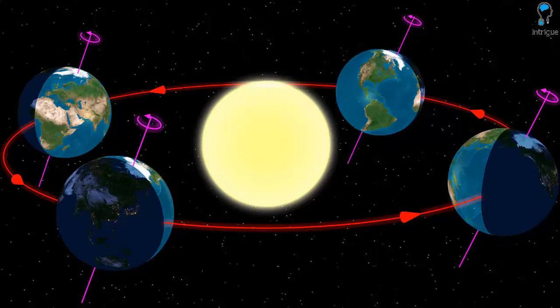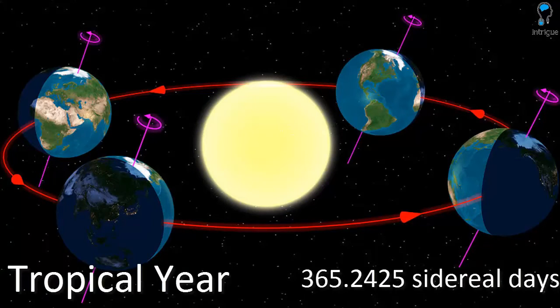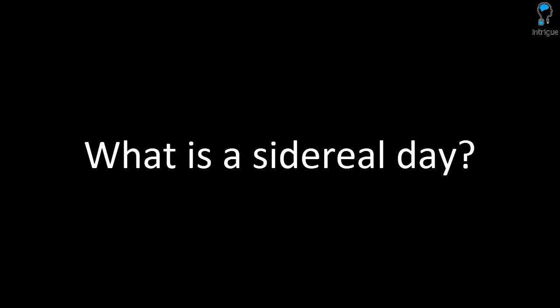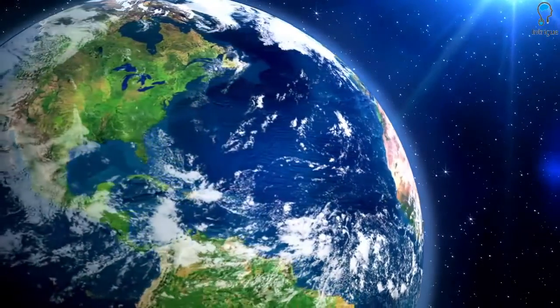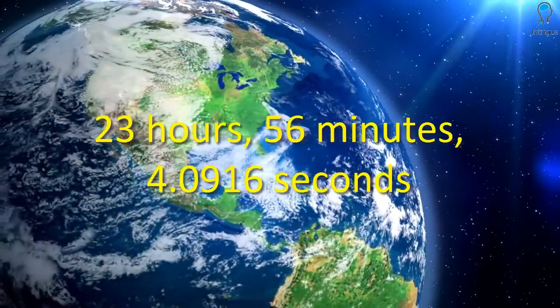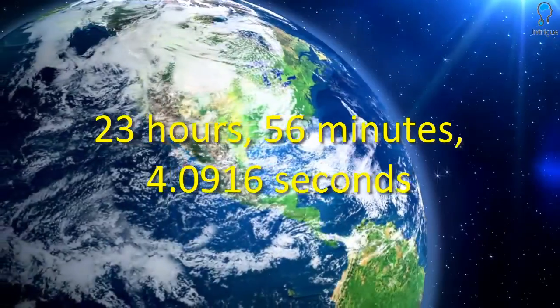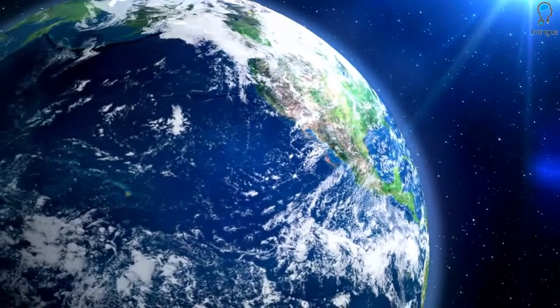Except this is not the case. You see, the actual length of time for Earth to orbit the Sun is the tropical year, which is actually 365.2425 sidereal days long, or 365 days, 5 hours, 45 minutes and 16 seconds. But what is the sidereal day? The sidereal day is the length of time the Earth takes to complete one rotation of its axis — equal to 23 hours, 56 minutes and 4.0916 seconds. This is the length the Earth takes to orbit on its axis once.